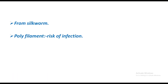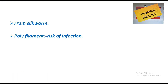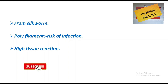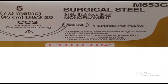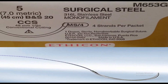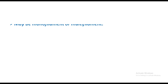Prolene is blue in color and monofilament. It is a polymer of polypropylene, causes low tissue reaction, and is used in closing rectus sheath, hernioplasty for closing aponeurosis, and fixing mesh.